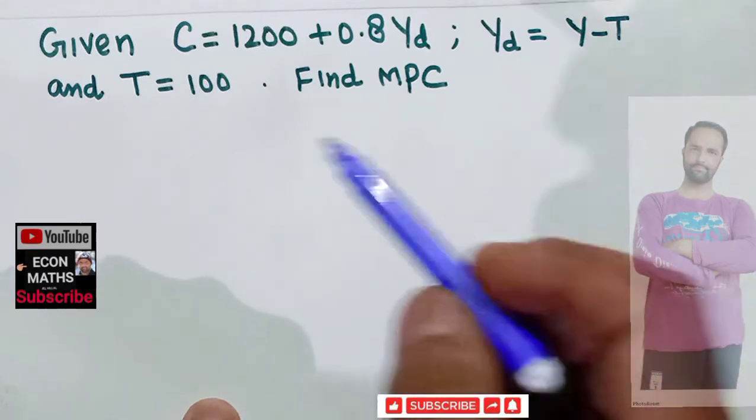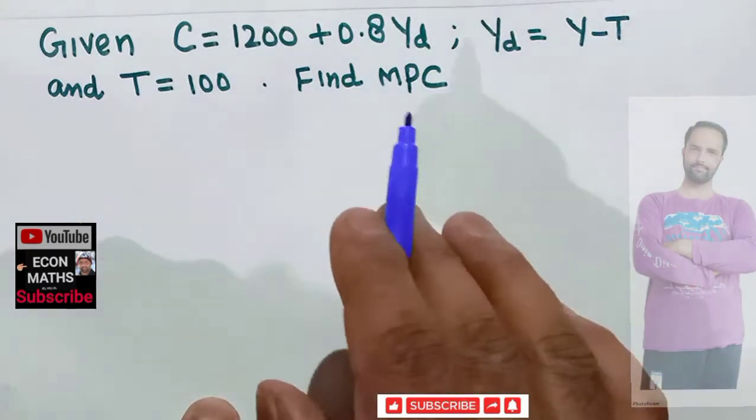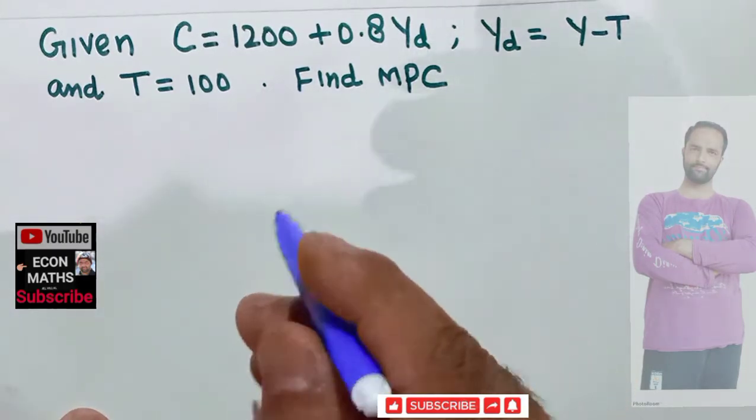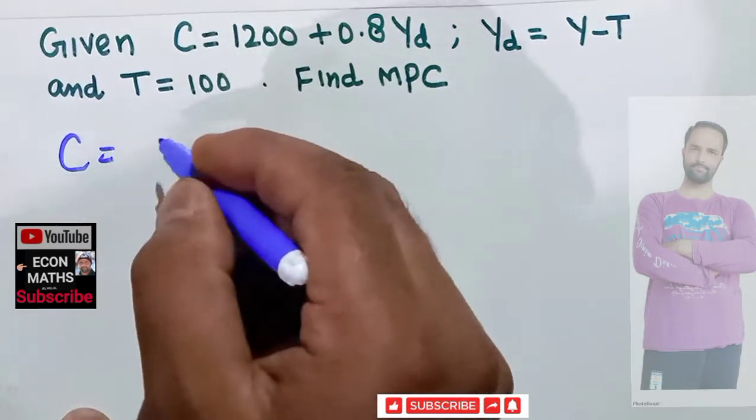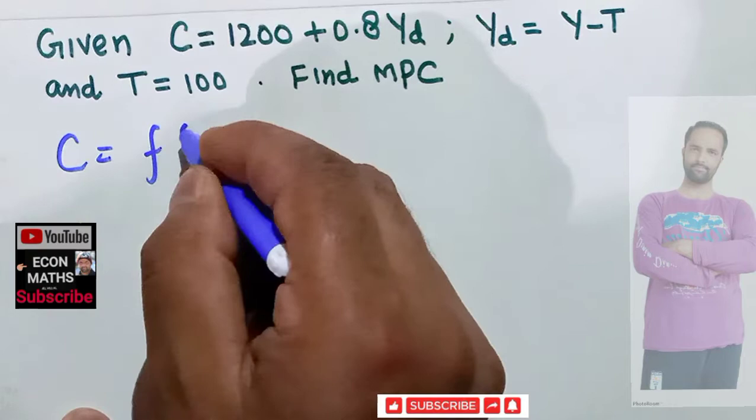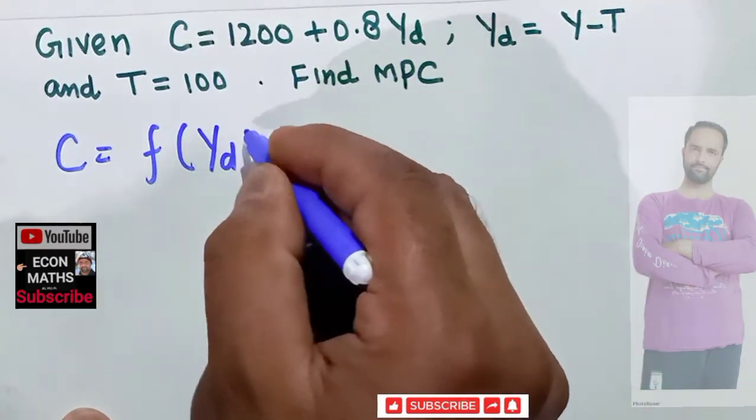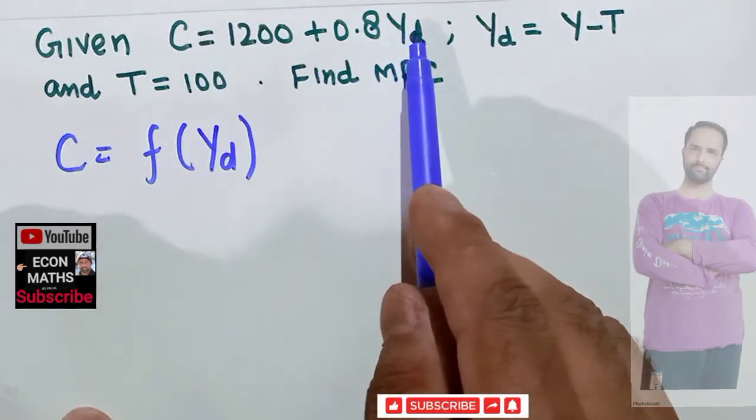And the lump sum tax is 100. We need to find out the MPC. This is a straightforward question. We are being given that our consumption is a function of disposable income. So our consumption depends upon the value of disposable income.